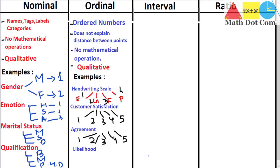Such scales are sometimes called Likert scales. There is a controversy about whether the Likert scale belongs to ordinal or interval scale. When you are not considering arithmetic operations, it is considered ordinal; when arithmetic operations are applied, it is considered interval. Likelihood similarly has different levels like the examples above. This is how the ordinal scale is defined.